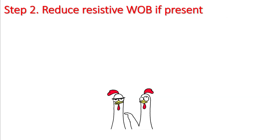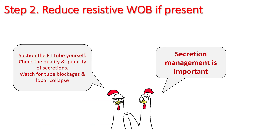The next step is to reduce resistive work of breathing if present, and the most important thing to notice is secretions. Secretions are pretty common in the ICU. With an endotracheal tube, you have to make sure that you suction the patient regularly and keep a close eye on the quantity and quality of secretions. Watch for tube blocks and lobar collapses.